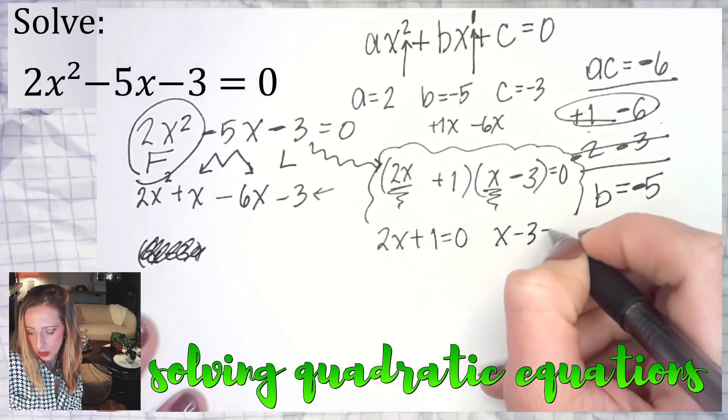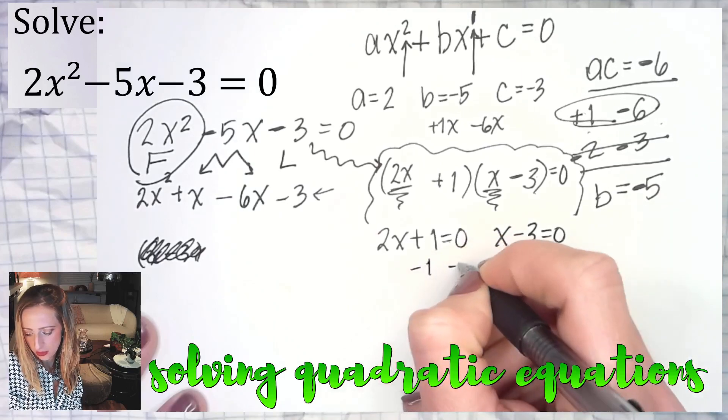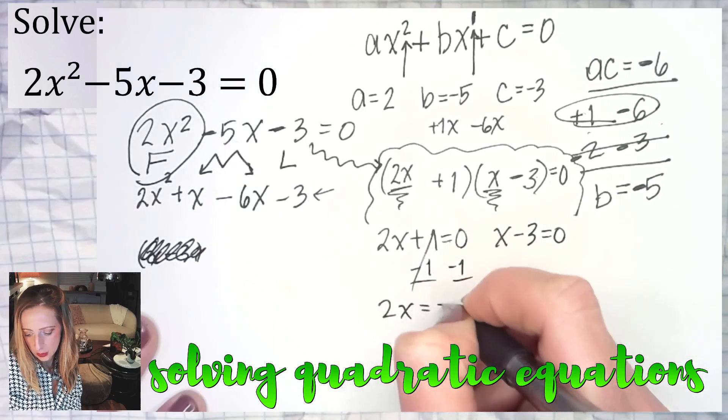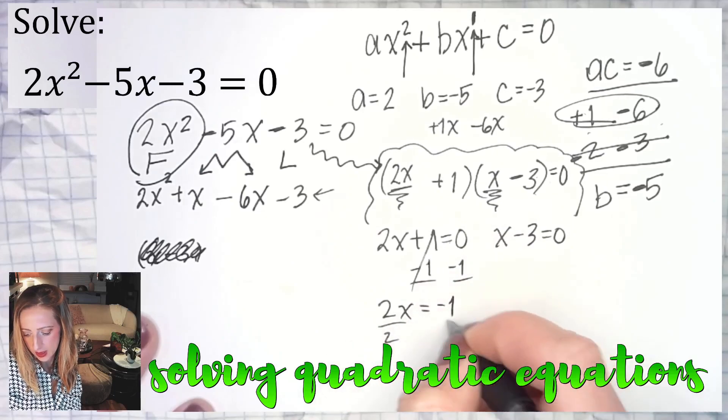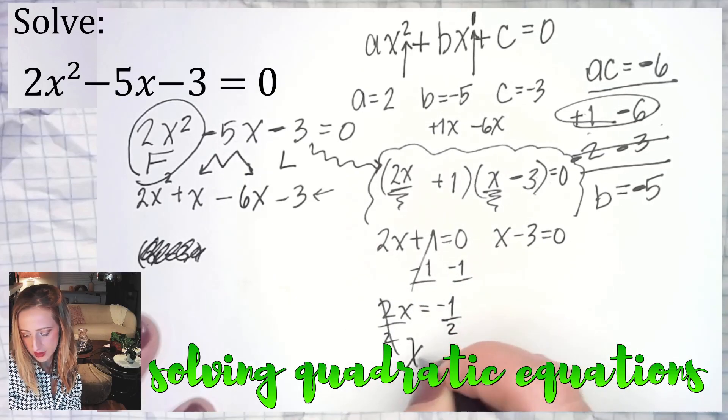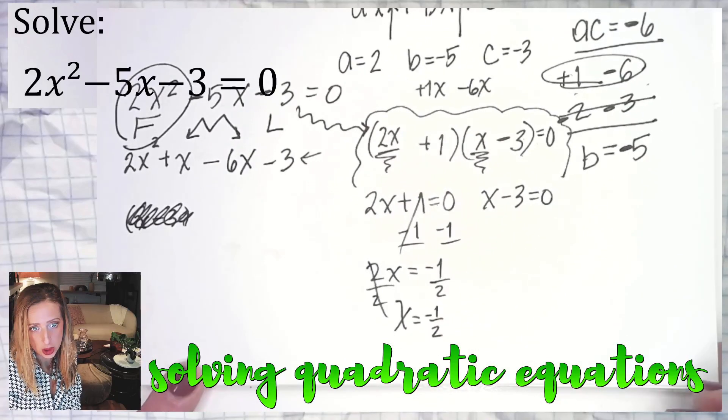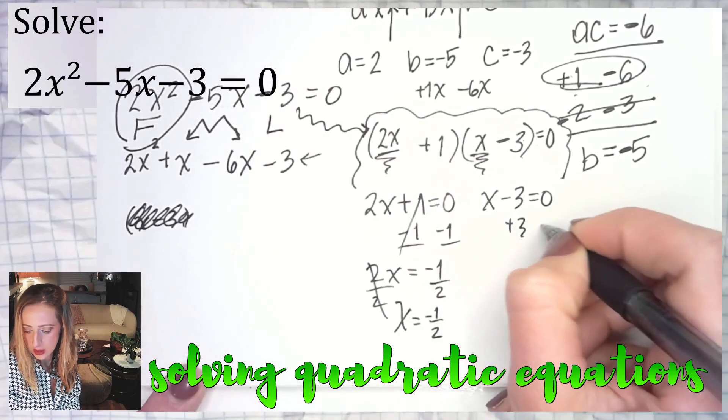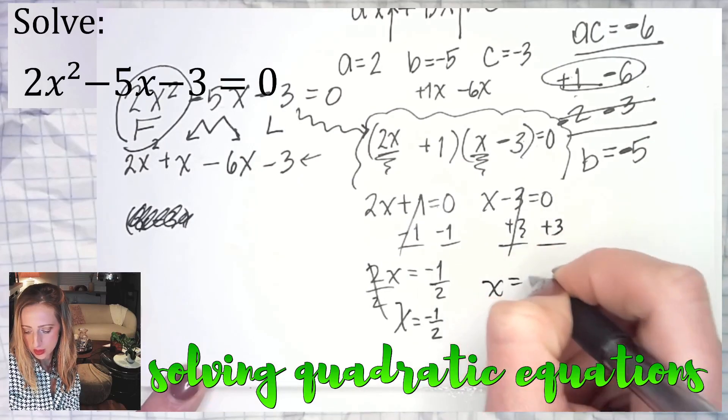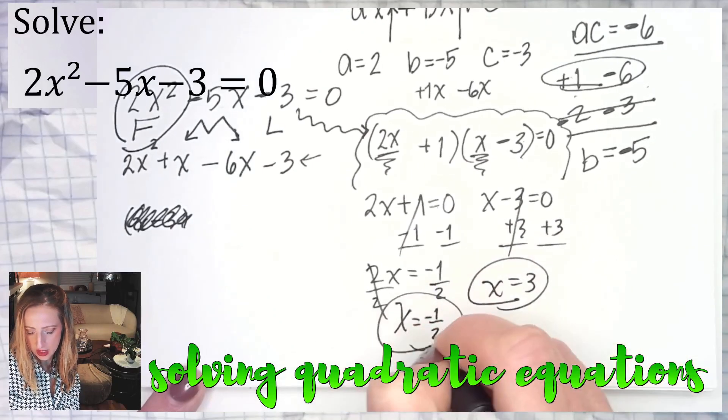x minus three also will equal zero. Subtract one from both sides. 2x is equal to negative one. Divide by two. x equals negative one over two. Add three. x equals three. There you go.